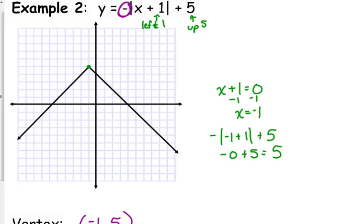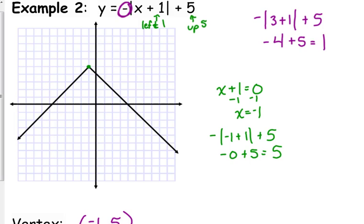Because of the negative in front, when I plug in 3 for x: 3 plus 1 is 4, the absolute value of 4 is 4, but the negative in front makes it negative 4. So instead of negative 4 plus 5, it's down lower. You can still always make a table, but if you understand these characteristics, it makes it a whole lot easier.